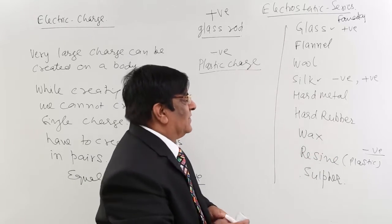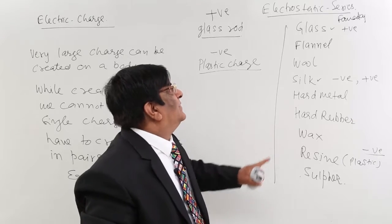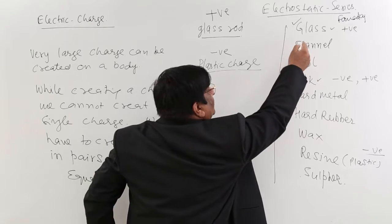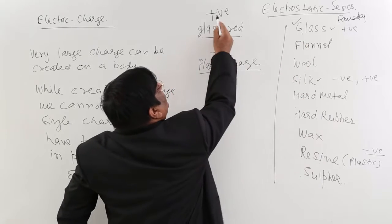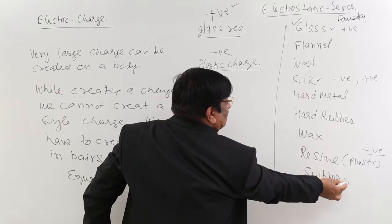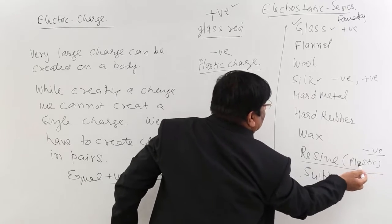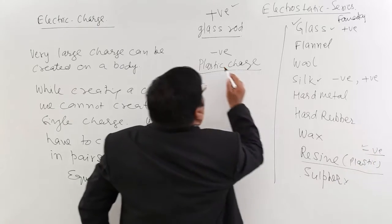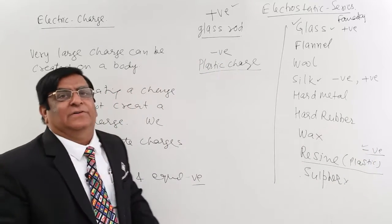This is just a reference point. At that time it was used a lot and this gives us a representation on top of the list glass. Glass rubbed with anything will always become positive. And sulfur we don't use practically much. So resin or plastic rubbed with anything will always become negative. These are the two representatives of different charges.